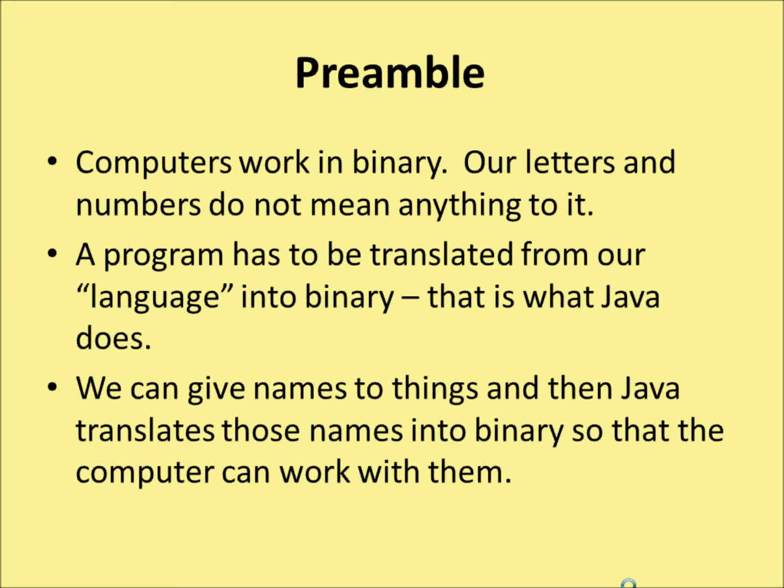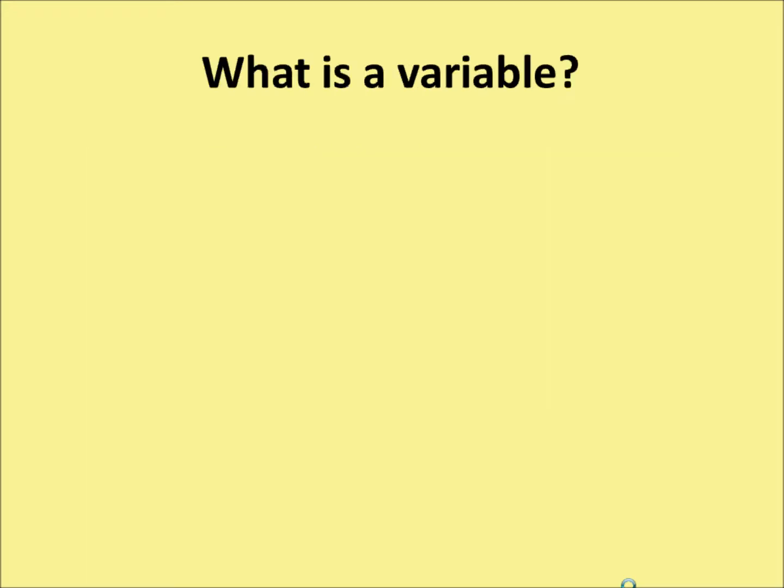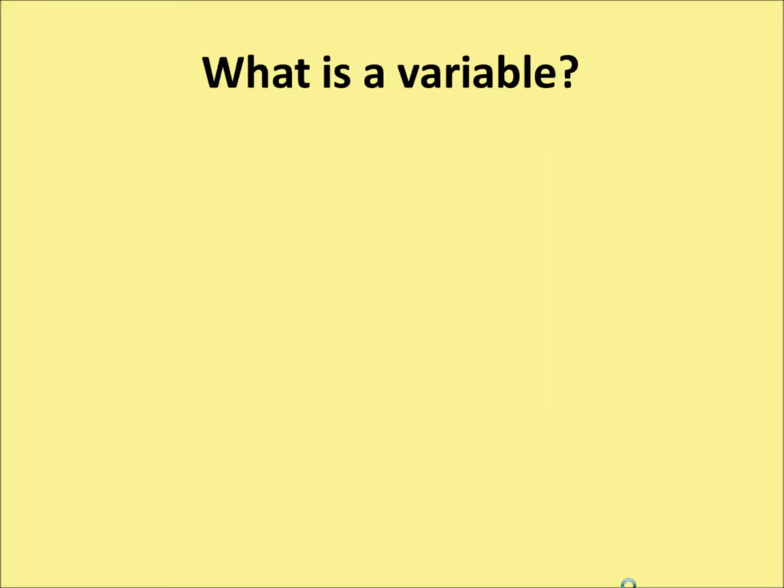We can give names to things, and then Java translates those names into binary so that the computer can work with them. Now let's get into the meat of the matter. What is a variable? Well, it's an address of a place in the random access memory — RAM — where some information is stored.